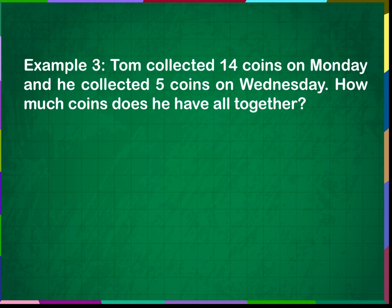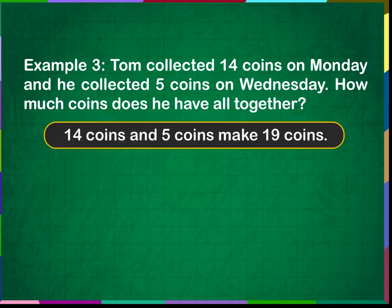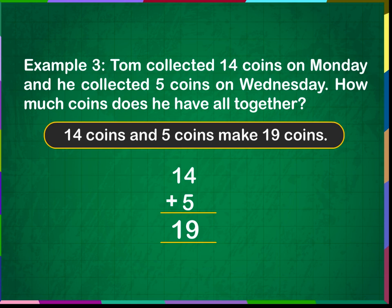Example 3: Tom collected 14 coins on Monday and 5 coins on Wednesday. How many coins does he have altogether? 14 coins and 5 coins make 19 coins. 14 plus 5 is equal to 19. Tom has 19 coins altogether.